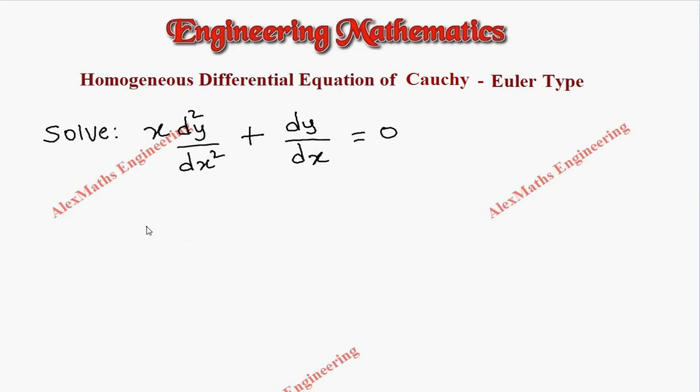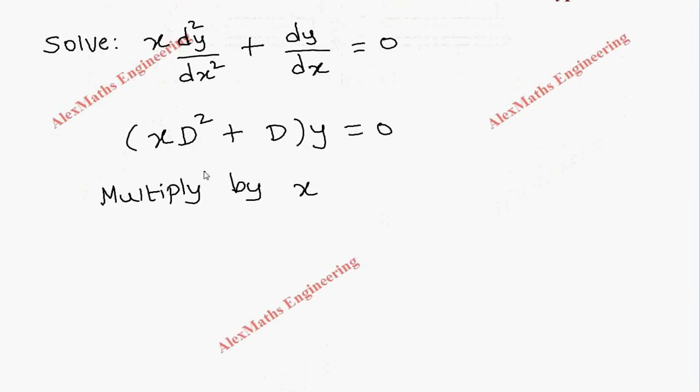It is rewritten as x d square plus d into y equal to 0. Now multiply by x so it will become x square d square plus x into d, and on the other side it is 0, so x into 0 is going to be 0.